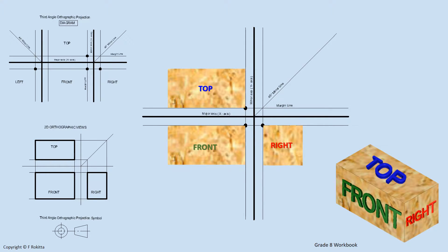On this screen we discuss third angle orthographic projection. At the bottom right hand corner of our screen we see the top, front and right view of the isometric block given in third angle. At the top left we have the skeleton diagram of our orthographic drawing, showing the placement of the top view, the front view, the right view and left view. In school we rarely make use of the left view in third angle, although it may be asked if needed. Below the skeleton diagram we see a rough schematic of the top, front and right view with construction lines, and we also see the symbol for third angle orthographic projection.